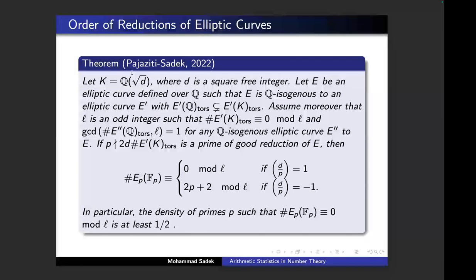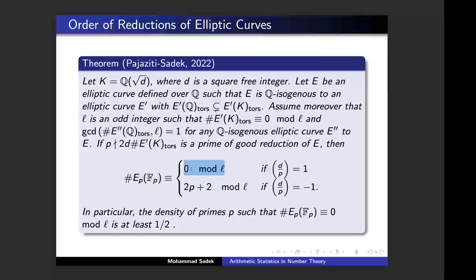As we did with Serre-Calegari, this torsion — this global fact about the elliptic curve — tells you something about local information: we can say something about the order of the reduction. The order of the reduction is divisible by certain integers coming from the torsion over the quadratic extension, or it's congruent to certain numbers modulo this integer.